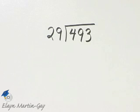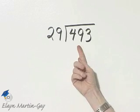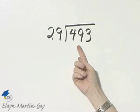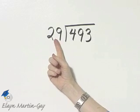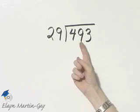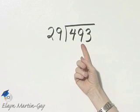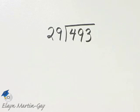Since there are 29 cans of paint and the total price is $493, to find the price of each can of paint, we would find how many 29s there are in that total price. So this is a division problem. Let's divide.